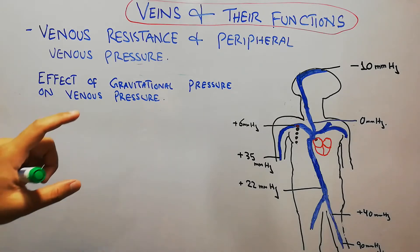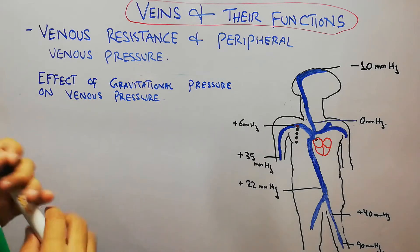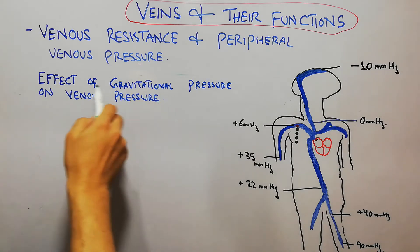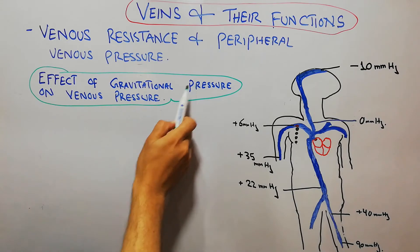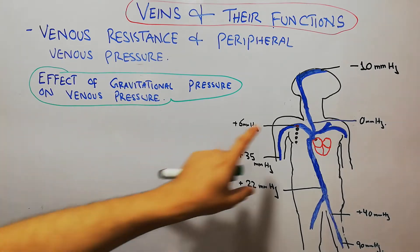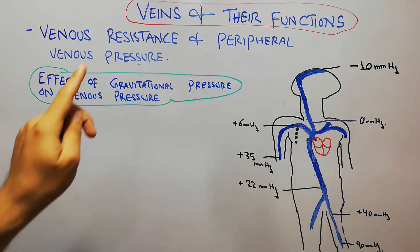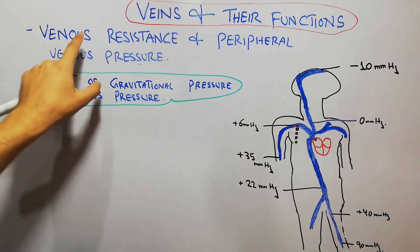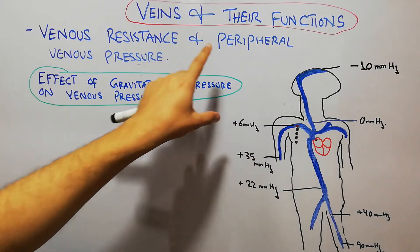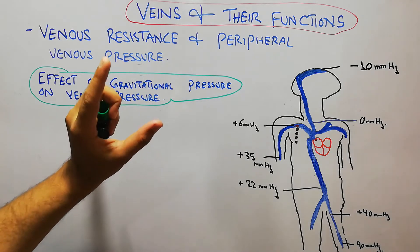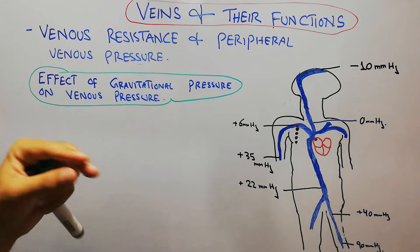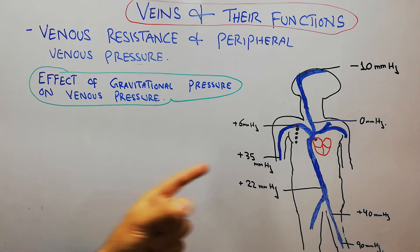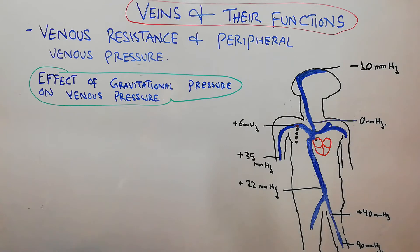Today in this lecture we are going to discuss the effect of gravitational pressure on venous pressure. We are basically discussing veins and their functions. We have discussed venous resistance, peripheral venous pressure, and central venous pressure. Today we are going to discuss what is the effect of gravity on venous pressure and how gravity is affecting the venous pressure.